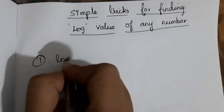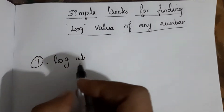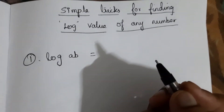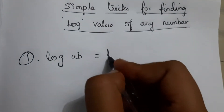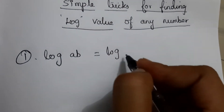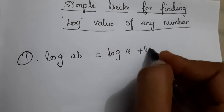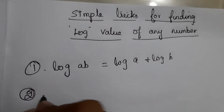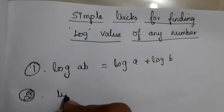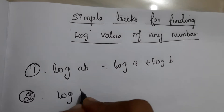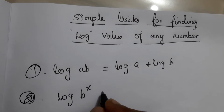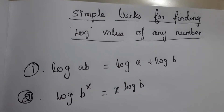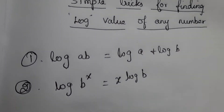The first rule is: log(a×b) is equal to log a plus log b. The second rule is: log(b^x) can be written as x times log b.